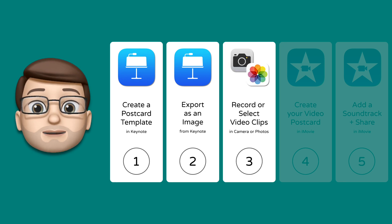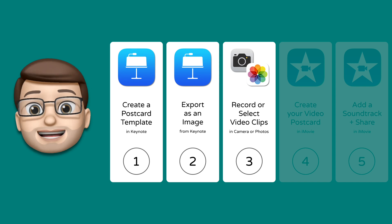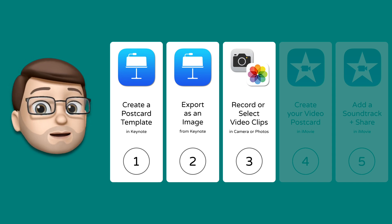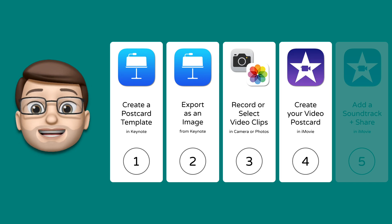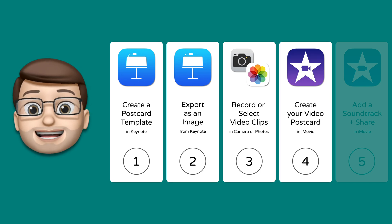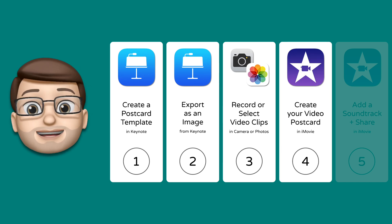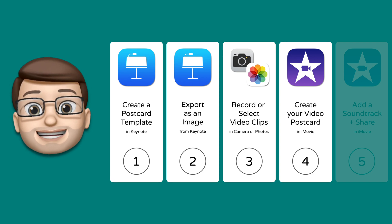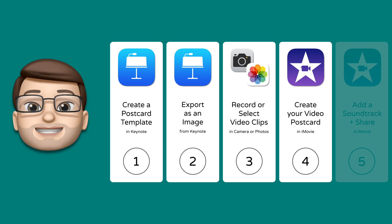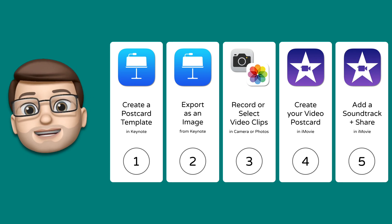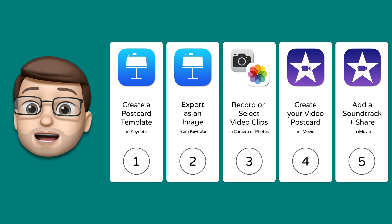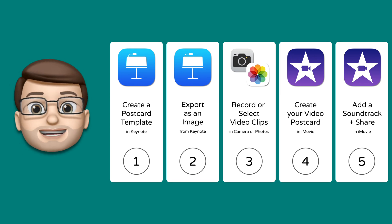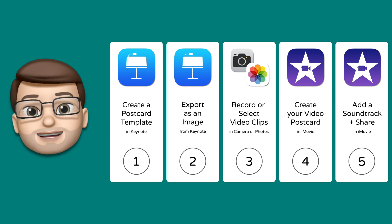In step number three it's time to start finding or recording some videos to use in your postcard — I'll show you how to record a time-lapse video if you'd like to. Then in step number four we're going to bring it all into iMovie and create our video postcard. I'll even show you how to add filters and effects to make your videos really pop off the screen. And last but not least in step number five we'll add our own soundtrack and export our postcard as a movie file that you can share anywhere you like.